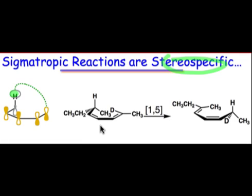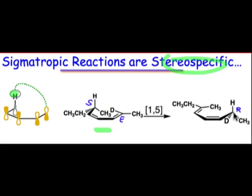The stereospecificity follows exactly from the frontier orbital analysis, where we saw that the hydrogen atom left one face and entered the same face of the π system. Here's how this was demonstrated: starting with a stereo well-defined reactant in which the configuration at the stereocenter is S, and the double-bond geometry with the deuterium atom at the terminal position has E geometry. Following the 1,5 shift, the hydrogen atom moves over to the carbon that has deuterium, creating a new stereocenter with R configuration. The only way it would have R configuration is if that hydrogen atom passed over the same top face, and this experiment proved that the hydrogen atom leaves and enters the same face in the 1,5-sigmatropic rearrangement.